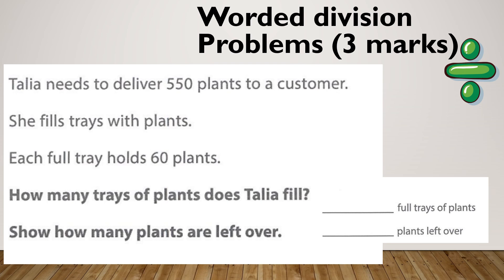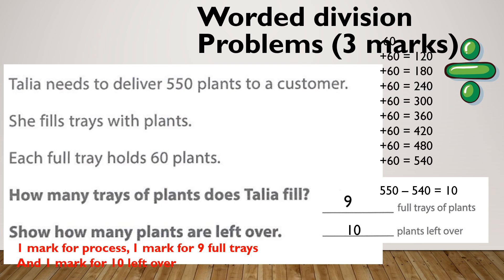Let's check that out. I left this one to last for a reason. Doing this as the bus stop method would be quite difficult. Because if I lay out my bus stop, I have how many 60's going to 5? There isn't any. How many 60's going to 55? There isn't any. How many 60's going to 550? I'm right back where I started.